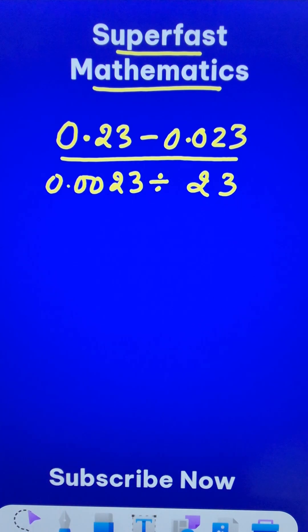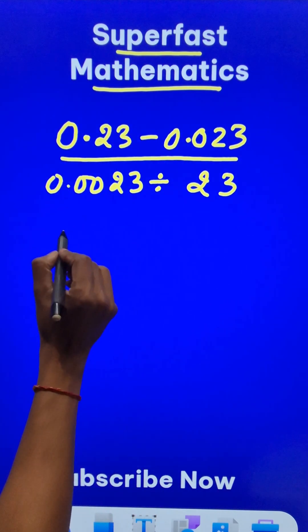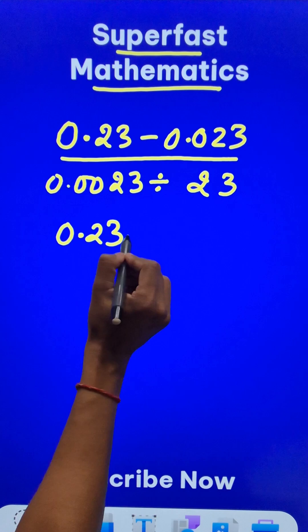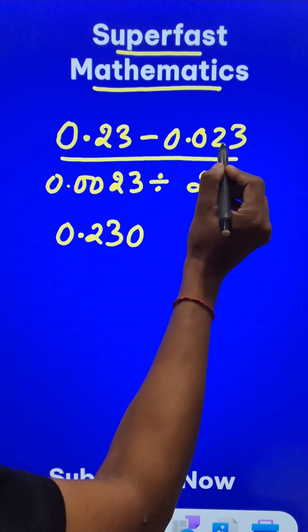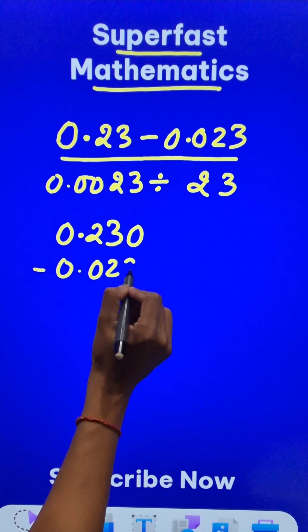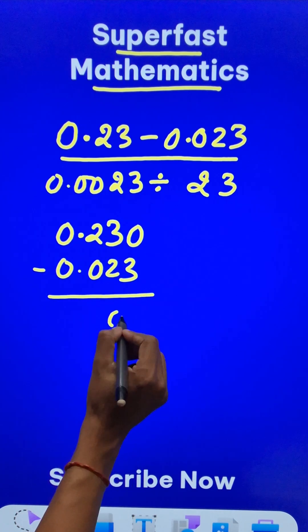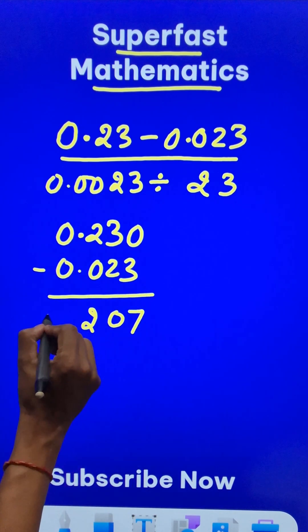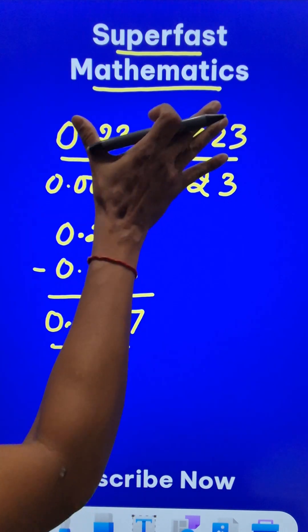Now where will the students go wrong here? In the numerator, it's pretty easy. For 0.23, you can suffix a 0 because this contains three digits after decimal. So you subtract 0.023 from this. Now this is easy: 30 minus 23 is 7, and 2 minus 0 is 2. So 0.207 is the answer for the numerator.